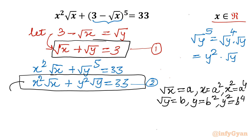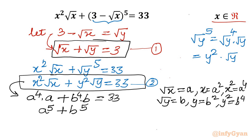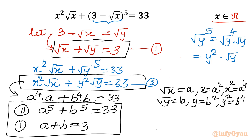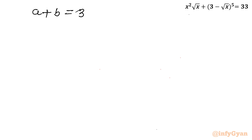Let us apply these substitutions. In equation 2, x² becomes a⁴ and √x becomes a; y² becomes b⁴ and √y becomes b, giving us a⁵ + b⁵ = 33. And equation 1 becomes a + b = 3. This system of equations is quite comfortable for us — let us solve it.